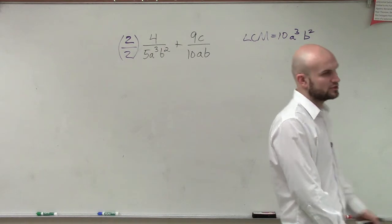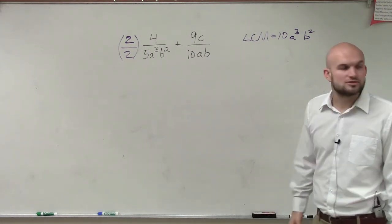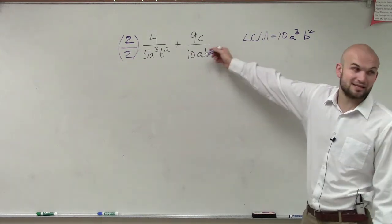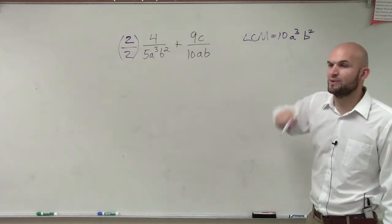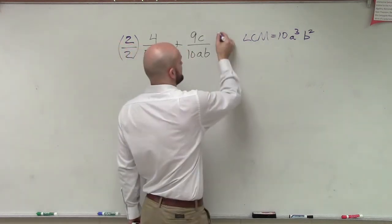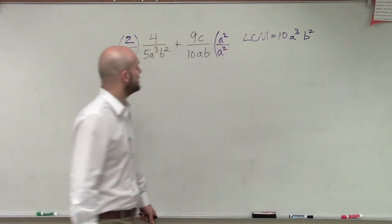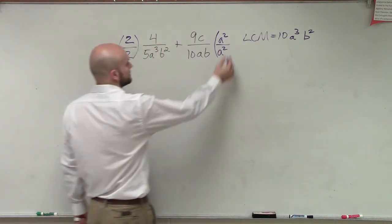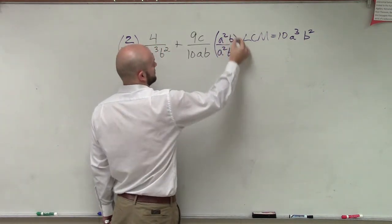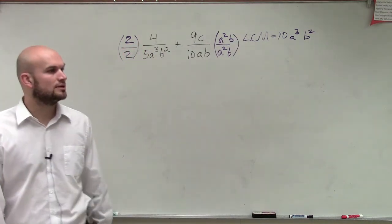Now, let's go over to looking on the right side. On the right side, I have 9C divided by 10AB. So, I need to multiply, I don't need to multiply anything by 10, but what do I need to multiply A by to give me A cubed? A squared. A squared, right? So, I multiply a number in the numerator and denominator, and what do I need to multiply B by? B to B squared. Well, just my B, right? Because B times B is B squared.